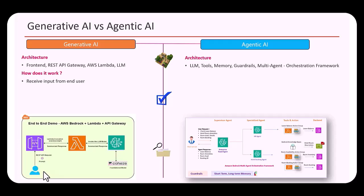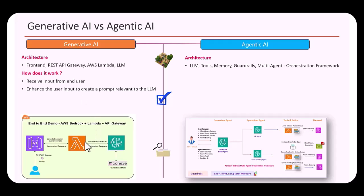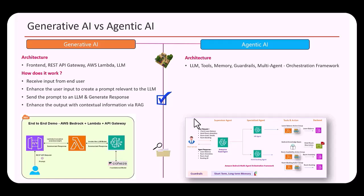In a typical generative AI application workflow, a user sends a prompt via AWS API Gateway to a Lambda function. The Lambda function enhances the user input with a prompt template and sends the request to Amazon Bedrock, which forwards it to a foundation model. The model generates a response and sends it back to the user.